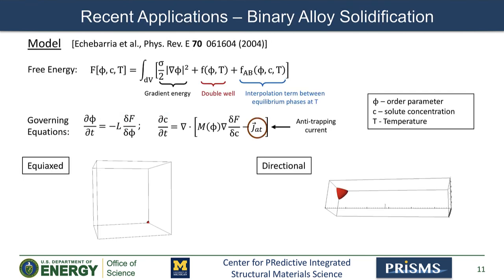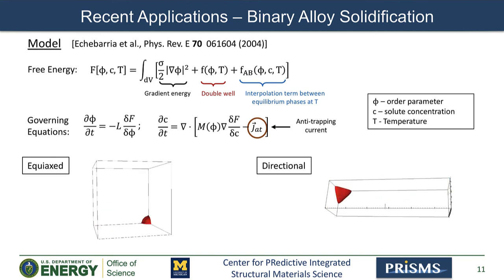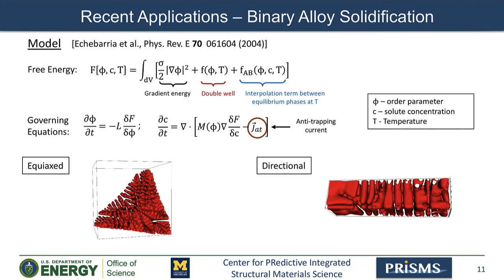Moving on to more recent applications, we have a new application for solidification of binary alloys based on the solidification model of Echevarria and collaborators, which introduces an anti-trapping term to correct for spurious effects that arise from using an artificially large interface width — considerably larger than the physical width of a typical solid-liquid interface. As with many other phase field models, the free energy contains a gradient energy term and a double-well term. In addition, we have a third term, FAB, which accounts for the concentration and temperature-dependent correction of the double-well according to the phase diagram. Movies of 3D simulation results show equiaxed solidification with uniform temperature and directional solidification with a temperature gradient along the horizontal direction.